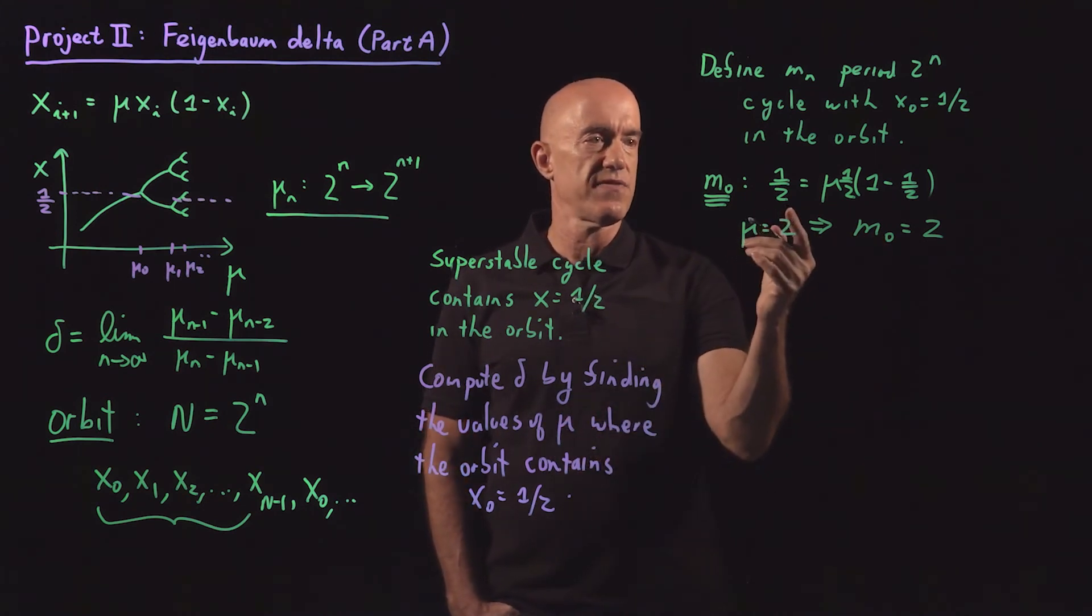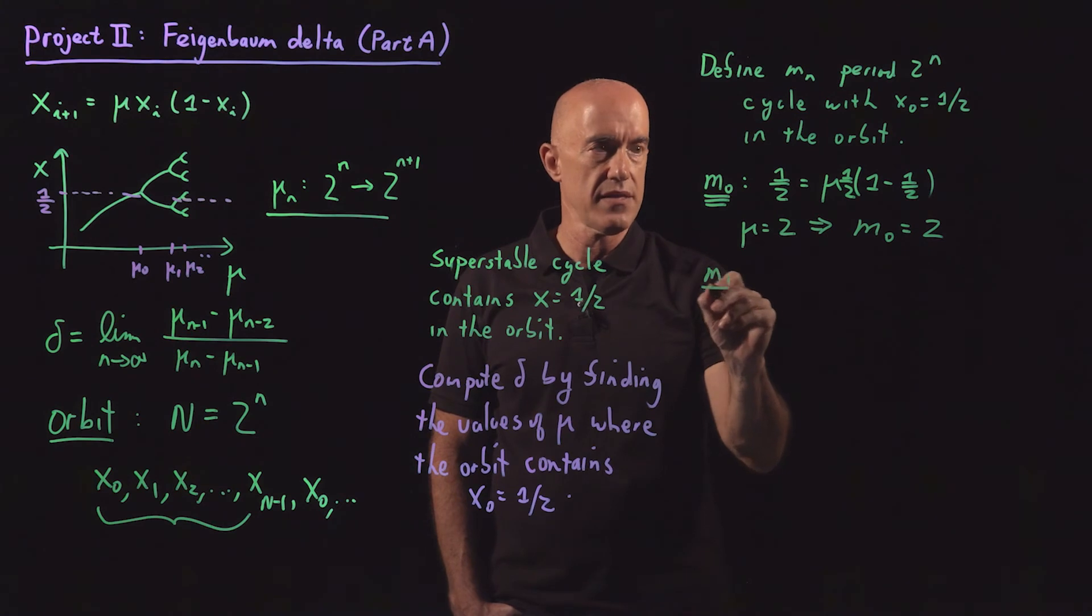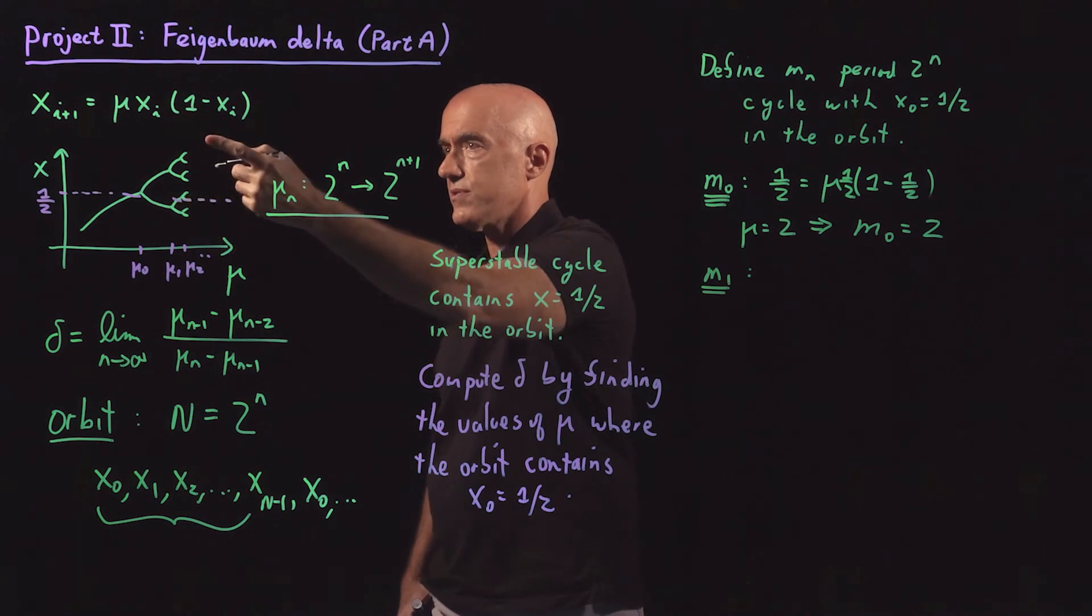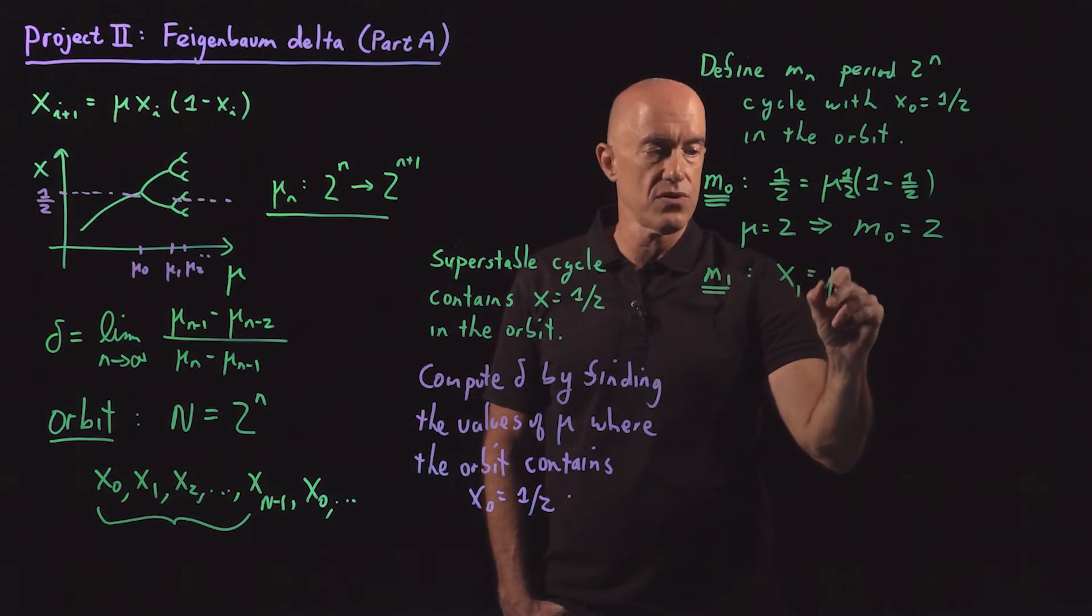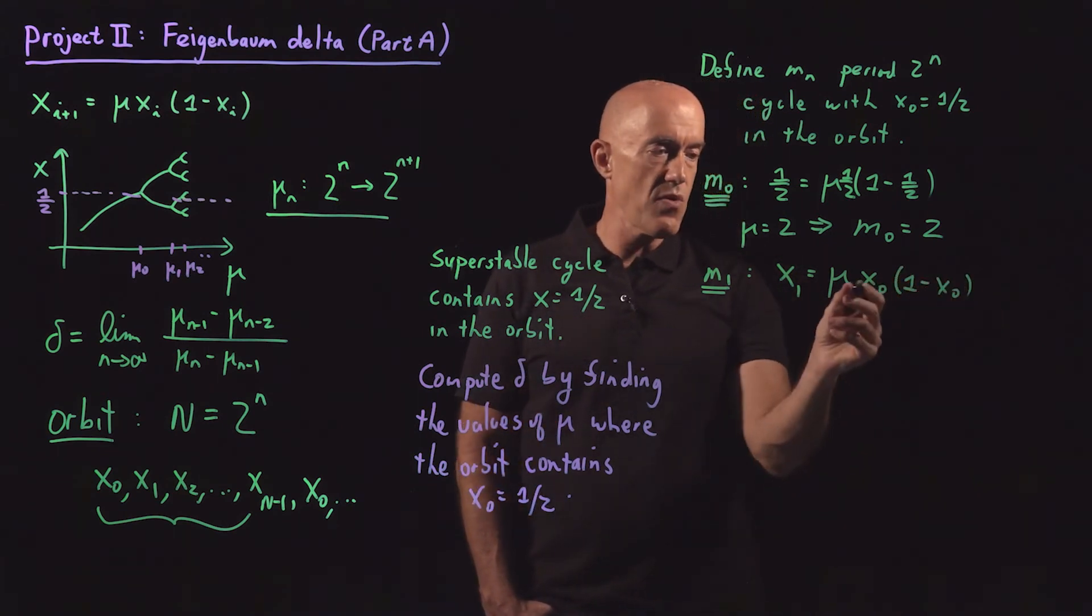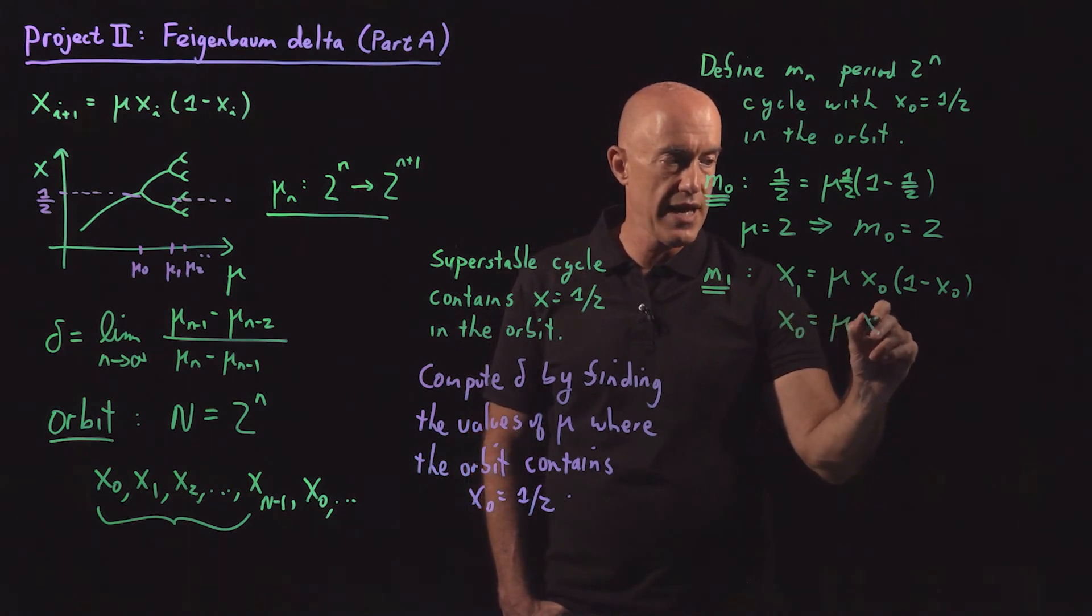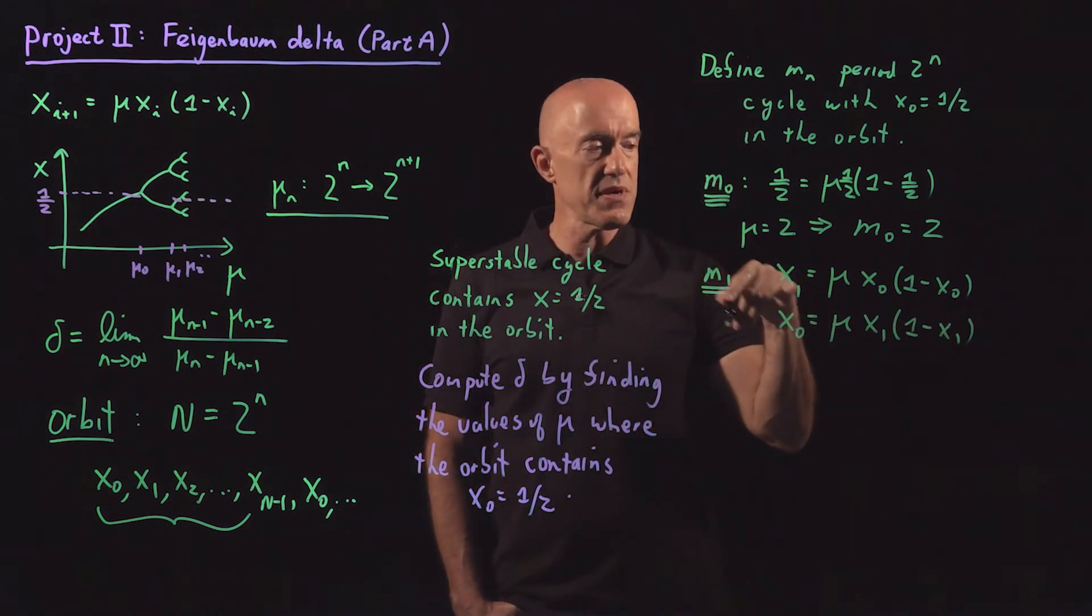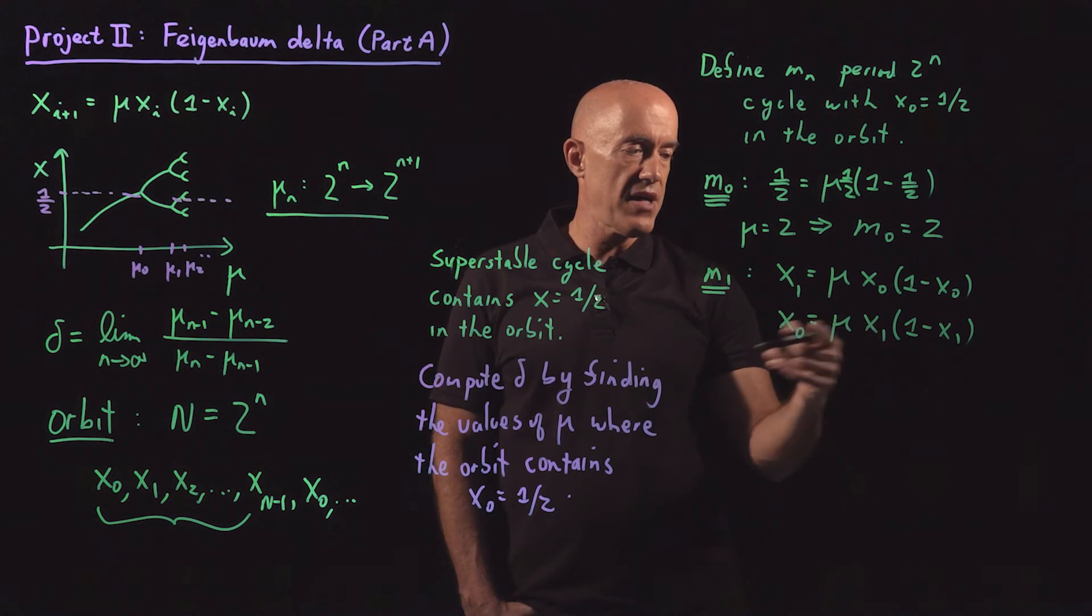The best we can do analytically is to find the period two value. So that would be m sub one. The period two value means that we have period two. So when we plug in x naught, we get x1. So x1 equals mu x naught times (1 minus x naught). And then when we plug in x1, we get back x naught. So x naught equals mu x1 times (1 minus x1). The super stable cycle has x naught equal to one half. We don't know what the value of x1 is.